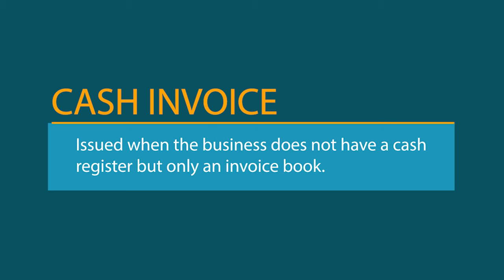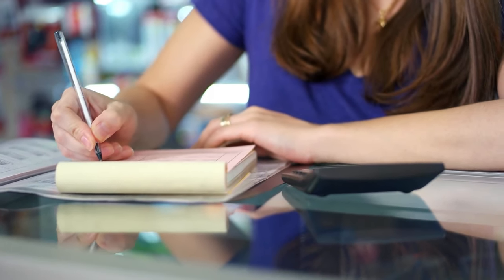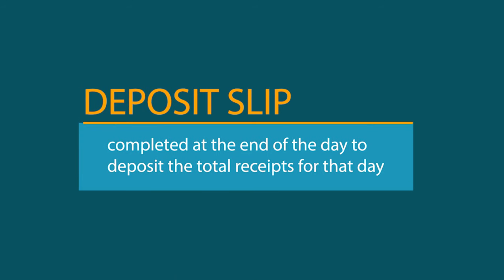The next source document is the cash invoice issued. This is issued when the business does not have a cash register, but only an invoice book. And the last one is the deposit slip, which is usually completed at the end of the day to deposit the total receipts for that particular day.